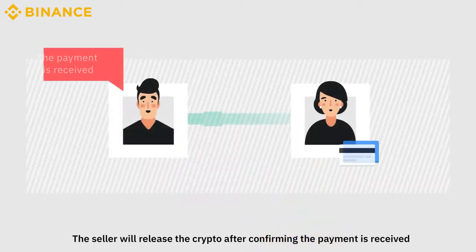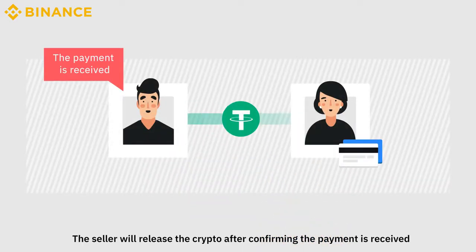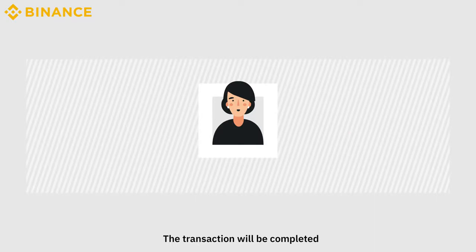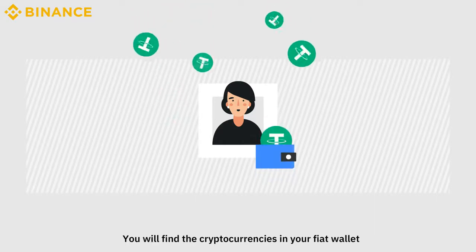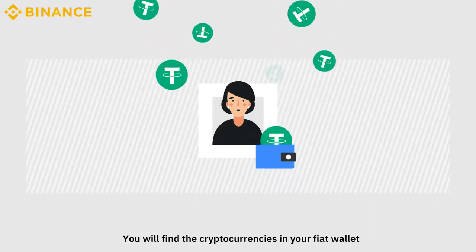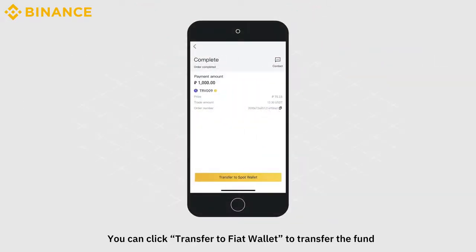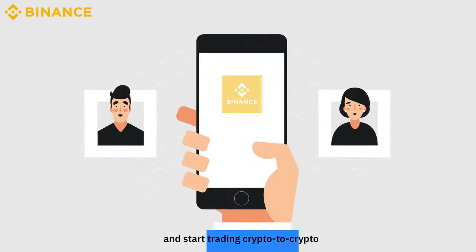The seller will release the crypto after confirming the payment is received, and then the status will be updated to To Be Released. The transaction will be completed and you will find the cryptocurrencies in your fiat wallet. You can click Transfer to Fiat Wallet to transfer the funds and start trading crypto to crypto.